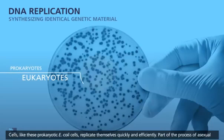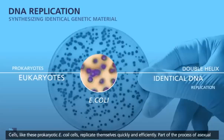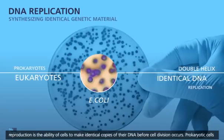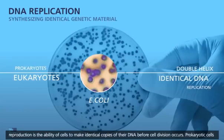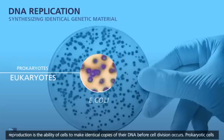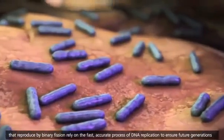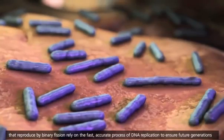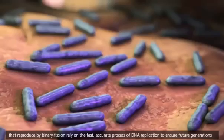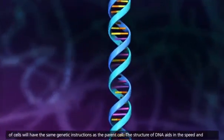Cells like these prokaryotic E. coli cells replicate themselves quickly and efficiently. Part of the process of asexual reproduction is the ability of cells to make identical copies of their DNA before cell division occurs. Prokaryotic cells that reproduce by binary fission rely on the fast, accurate process of DNA replication to ensure future generations of cells will have the same genetic instructions as the parent cell.